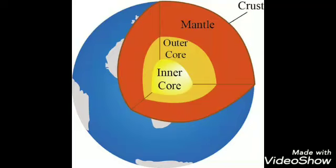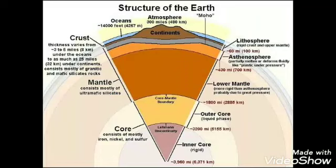First, the inner core. The innermost layer of the earth is called the inner core. It is a huge solid metal ball composed of iron and nickel with a diameter of 2400 kilometers. The outer core.